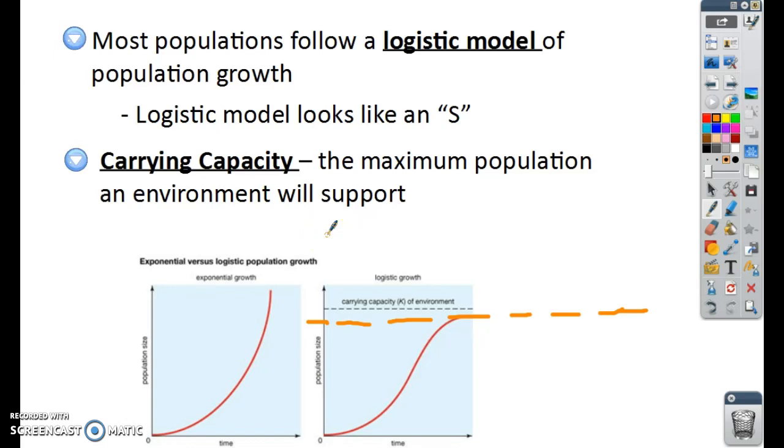Why? Because maybe the environment only has so much food. Maybe the environment only has so much space. So if we think about the word capacity, right? What does capacity mean? Capacity means like the maximum level. So the maximum capacity on a bus is the maximum number of people before they can say it's full. So carrying capacity is the maximum number that the ecosystem can carry or hold before we're going to start running out of resources.